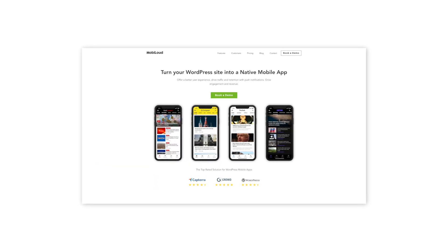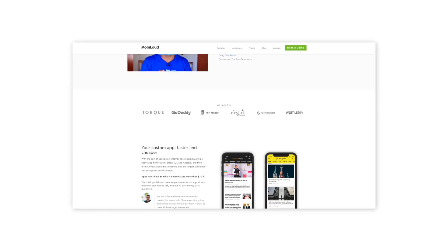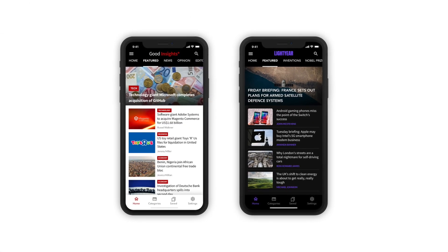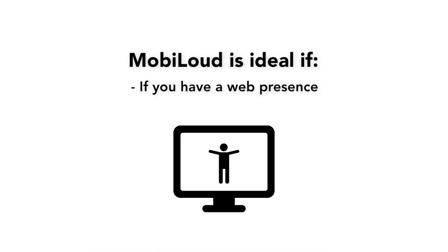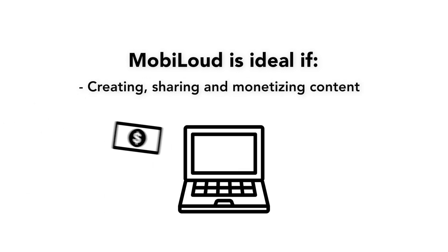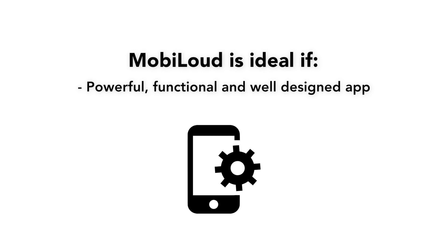Now let's take a look at MobiLoud. MobiLoud is a done-for-you solution for digital publishers who want a powerful custom mobile app built for them. The app development process for MobiLoud begins with an experienced call from our team to determine what your exact needs and requirements are for your project. The results of working with MobiLoud will be a fully branded white-label app designed to your liking. MobiLoud is ideal if you have a web presence based around creating and sharing content, or if you want to focus on creating, sharing, and monetizing your content, or if you want a powerful, functional, and well-designed app quickly and at a fraction of the cost that an agency would charge.